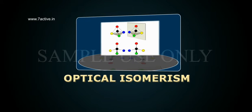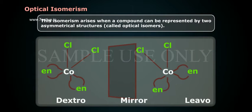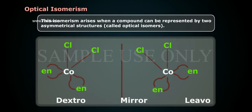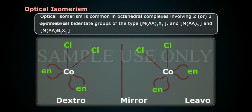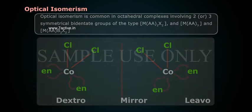Optical Isomerism arises when a compound can be represented by two asymmetrical structures called optical isomers. The two isomers are structurally the mirror images of each other, non-superimposable, and do not possess a plane of symmetry. Optical isomerism is common in octahedral complexes involving two or three symmetrical bidentate groups of the type MAA2X2, MAA3, and MAAB2X2.